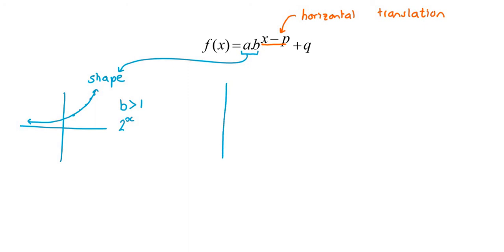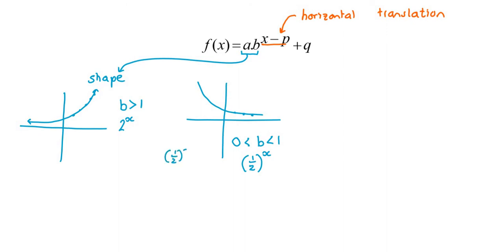The second shape is a decreasing exponential — where the graph is going down — and that occurs when your base is between 0 and 1, meaning a common fraction. For example, one-half to the power of 1 is one-half; to the power of 2 is one-quarter; to the power of 3 is one-eighth — so the graph keeps getting smaller. For negative exponents like one-half to the negative 1, bringing the 2 to the top makes it positive, so the graph is larger in the negative x region — and that's why it's a decreasing function.